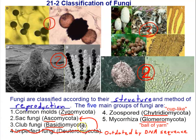Those are the phylum names, but you'll hear them commonly referred to as zygomycetes, ascomycetes, basidiomycetes, chytridiomycetes, and glomeromycetes. Those are just common ways of referring to the phylum, but those are not phylum names — the phylum names always end in 'mycota.'